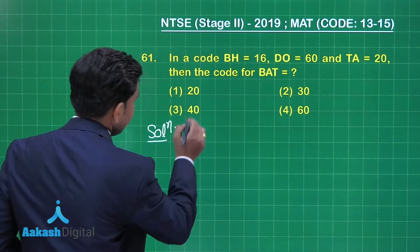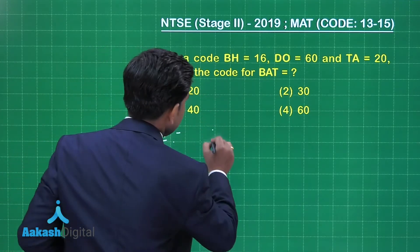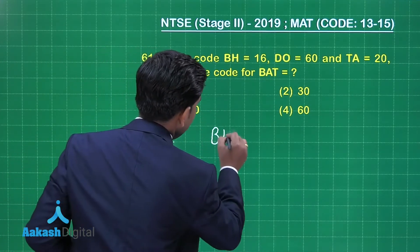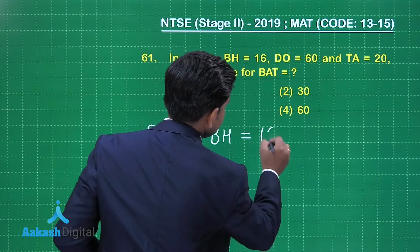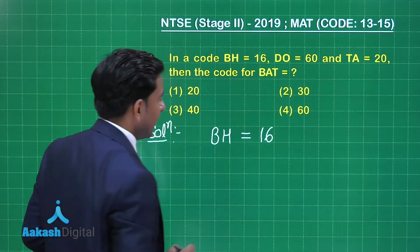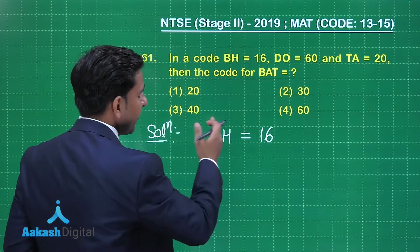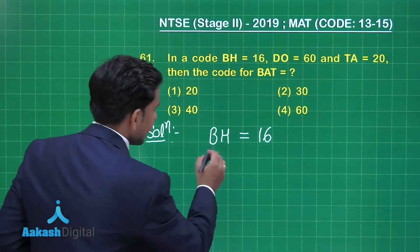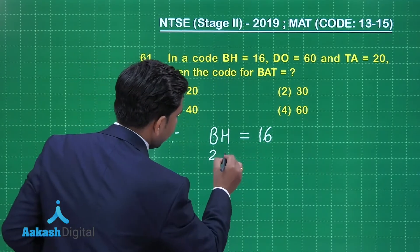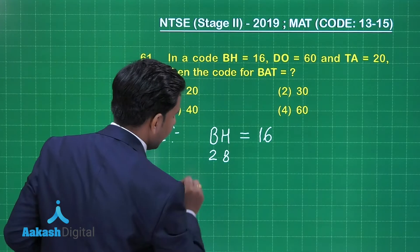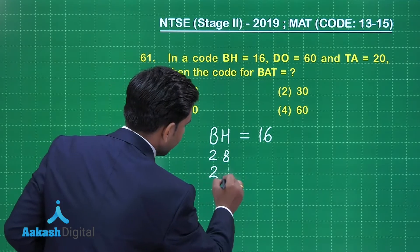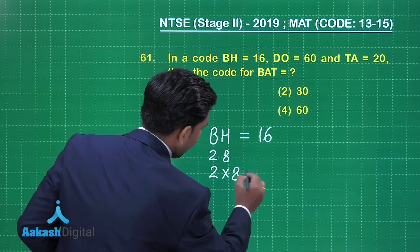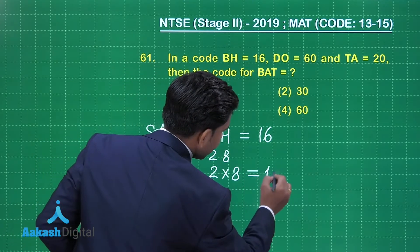The first one is BH, which is equal to 16. The positions of the alphabets are 2 and 8 respectively. When you multiply 2 by 8, you obtain 16.